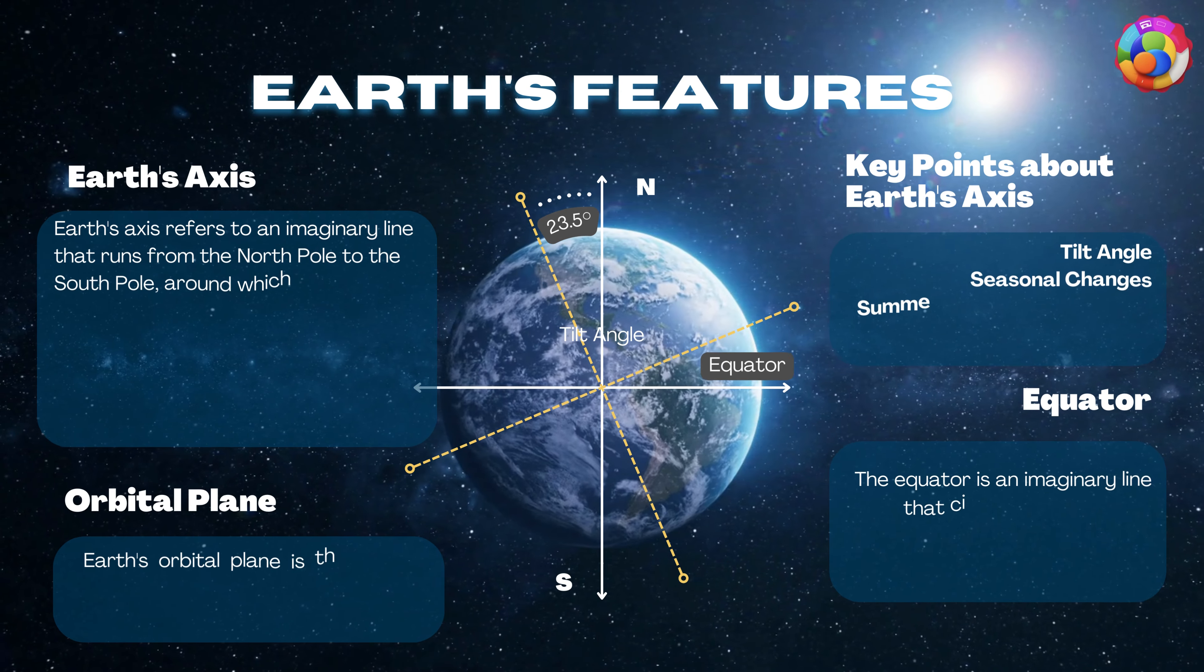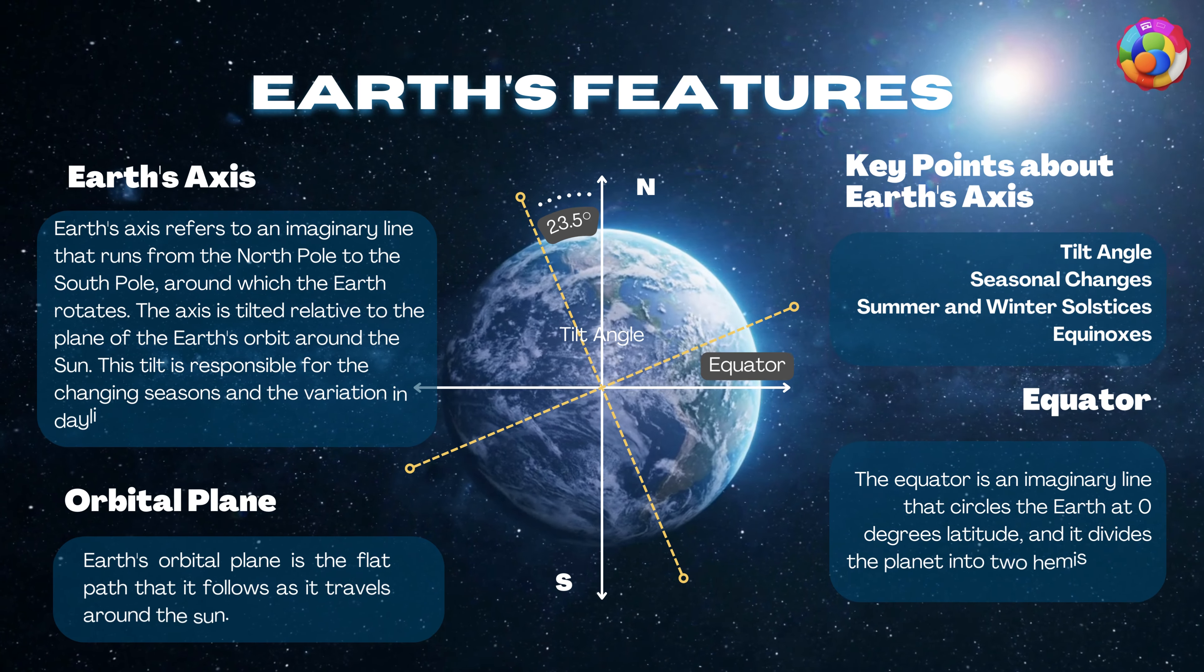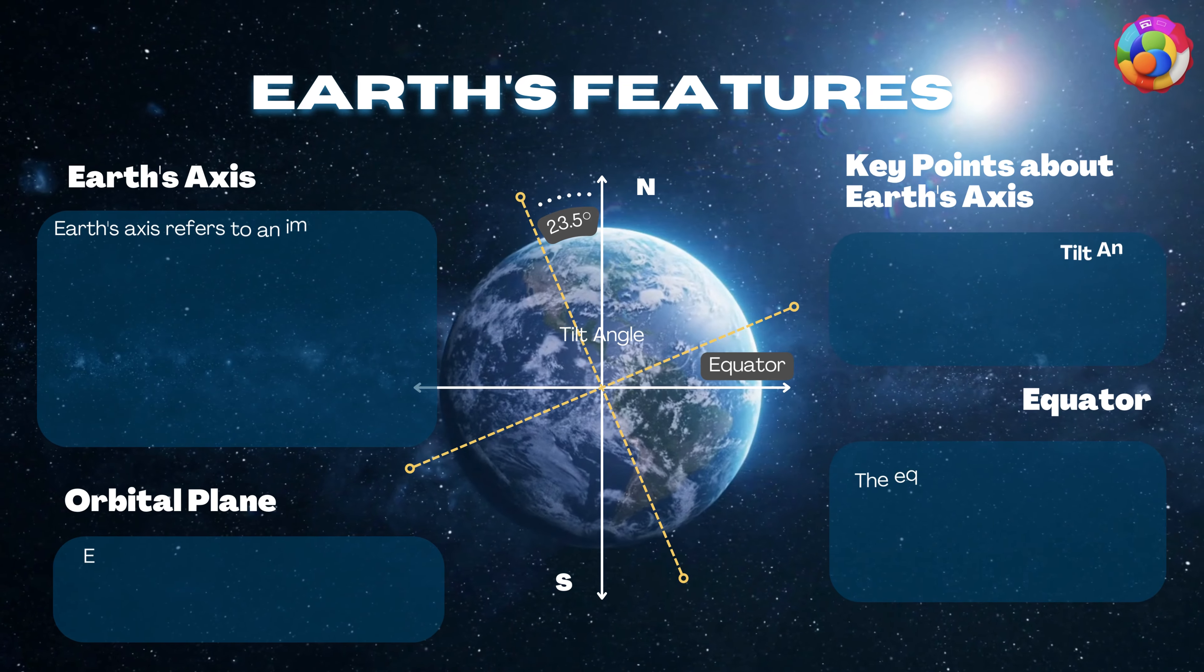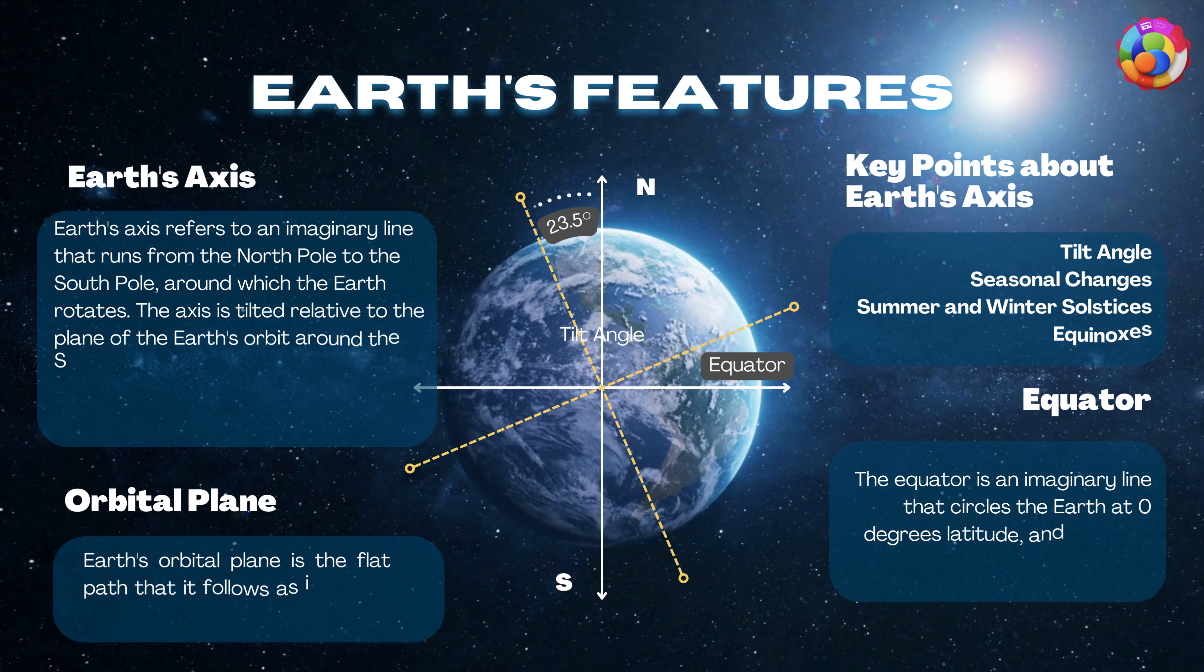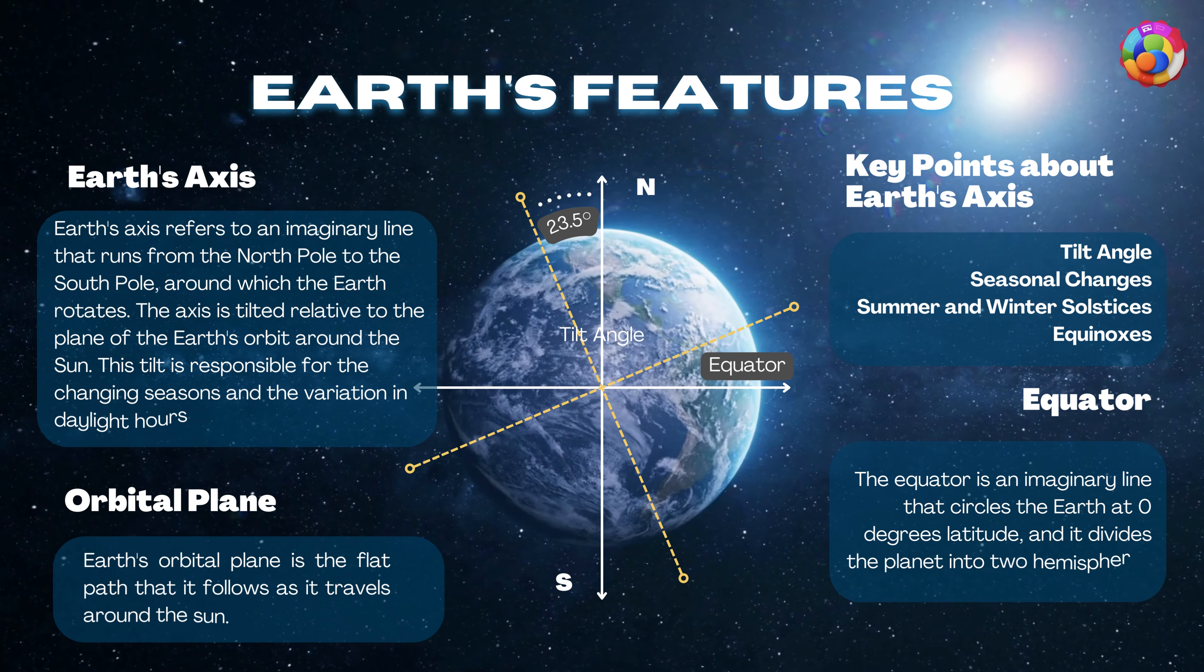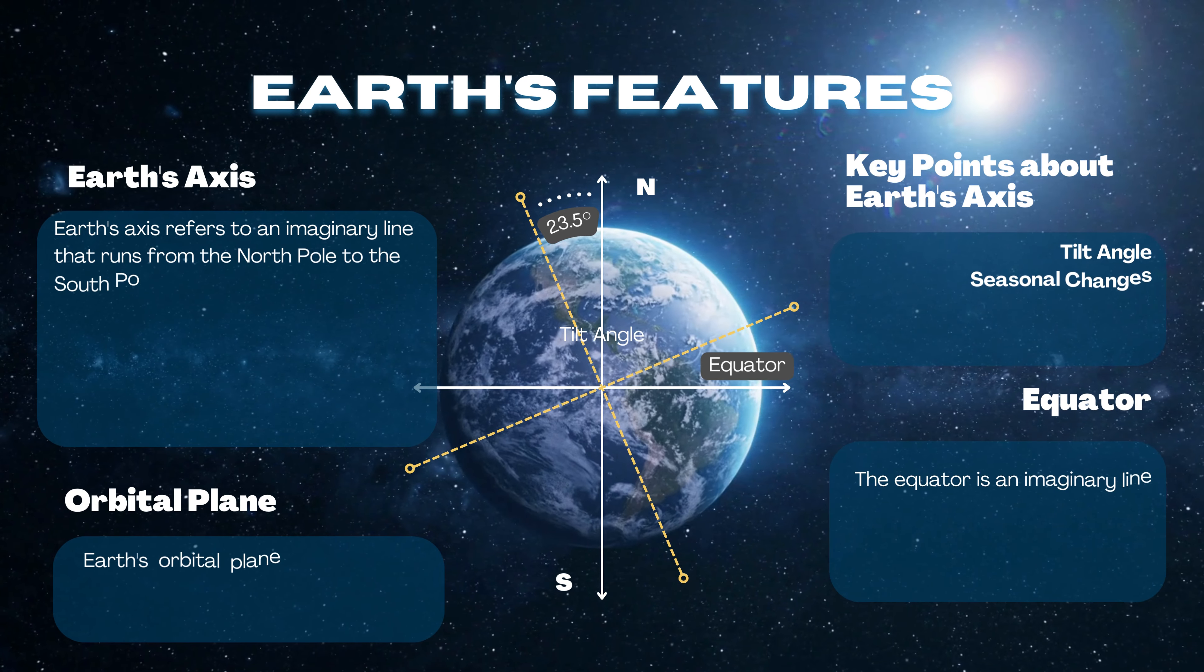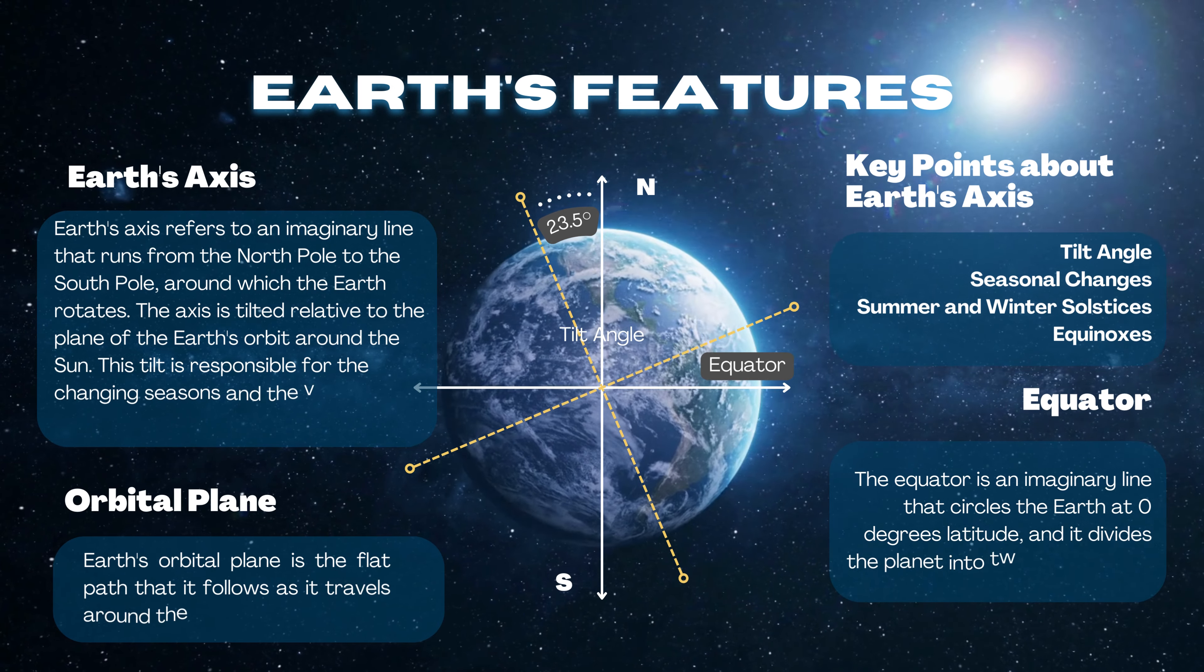Earth's features. Earth's axis refers to an imaginary line that runs from the north pole to the south pole, around which the Earth rotates. The axis is tilted relative to the plane of the Earth's orbit around the sun. This tilt is responsible for the changing seasons and variation in daylight hours throughout the year.